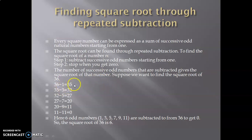36 minus 1 is 35. 35 minus 3 is 32. 32 minus 5 is 27. 27 minus 7 is 20. 20 minus 9 is 11. 11 minus 11 is 0. Here, 6 odd numbers are subtracted from 36 to get 0, so square root of 36 is 6.